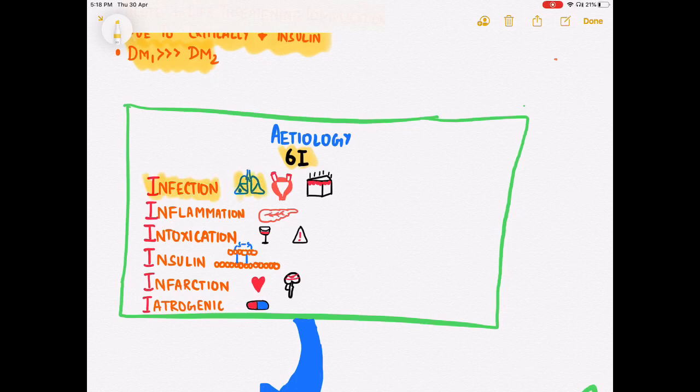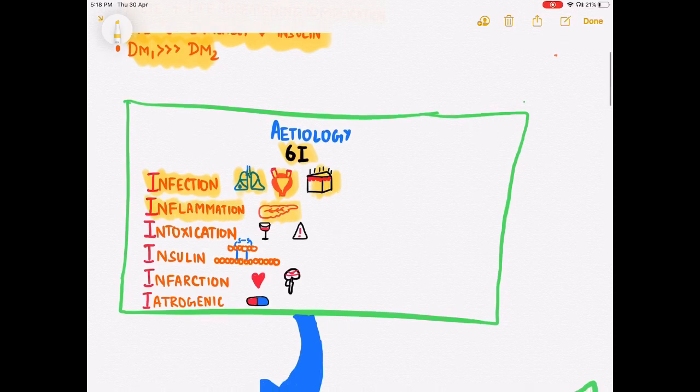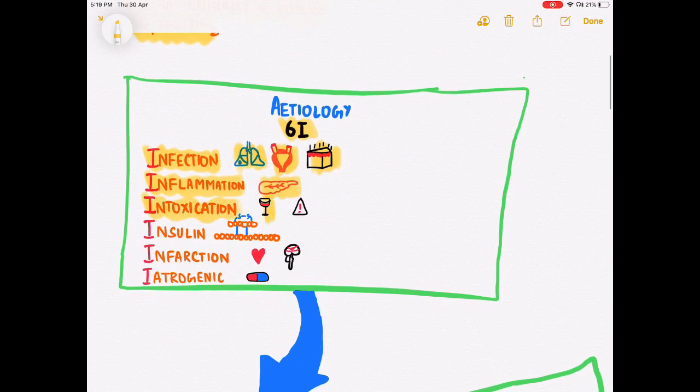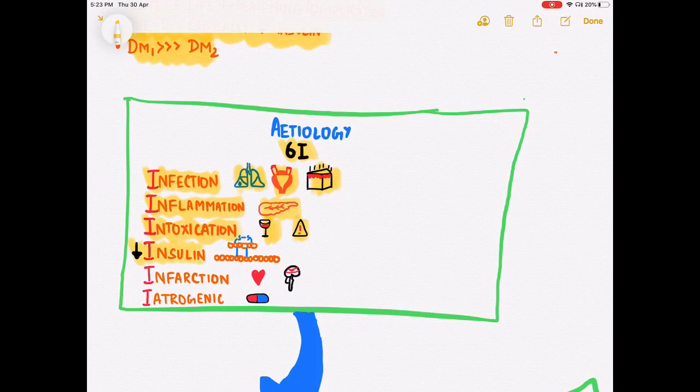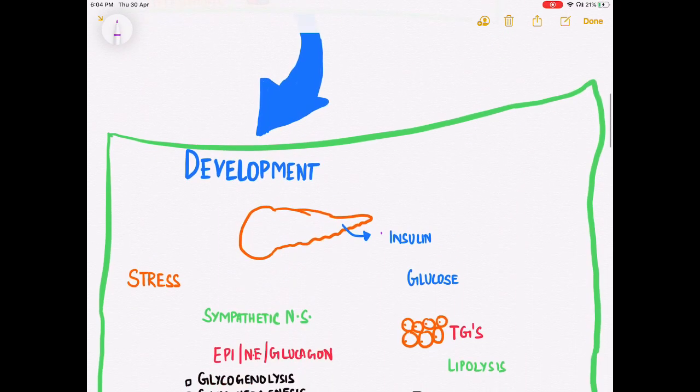The first I is infection, which can be pneumonia, urinary tract infection, or cellulitis. It can also be caused due to inflammatory diseases such as pancreatitis. Intoxication such as alcohol or cocaine intoxication could also cause low insulin levels. Inappropriate withdrawal of insulin in diabetic patients could also precipitate it. Infarction in vessels of the heart as in acute MI or in brain as in stroke could also trigger it. It can also be triggered by iatrogenic substances such as corticosteroids.